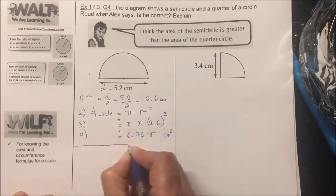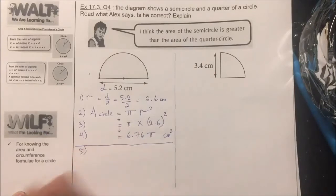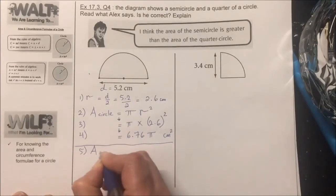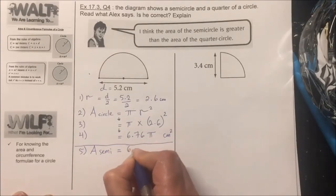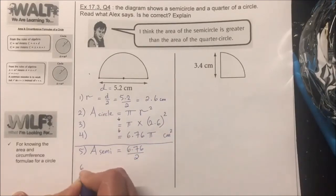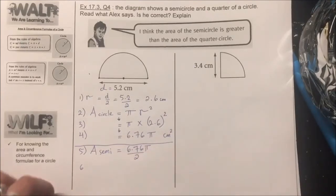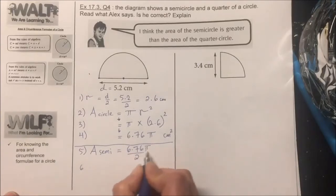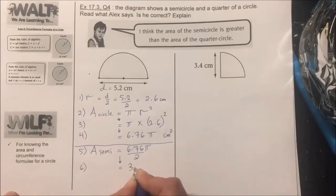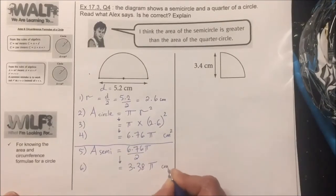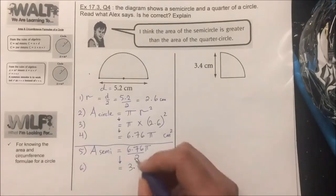In step five, we find the area of a semicircle by dividing the area of the full circle by 2. So 6.76π divided by 2 gives us 3.38π cm². We leave our answer in terms of pi for now.